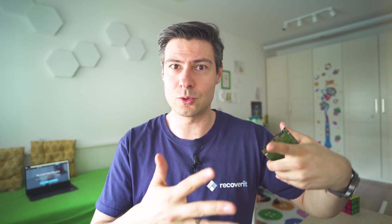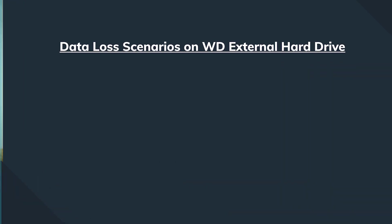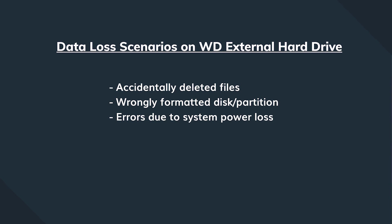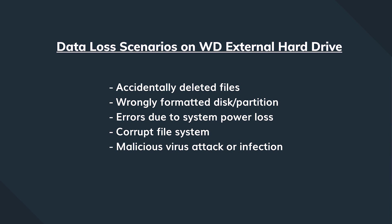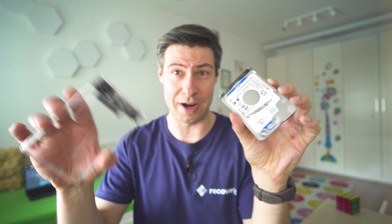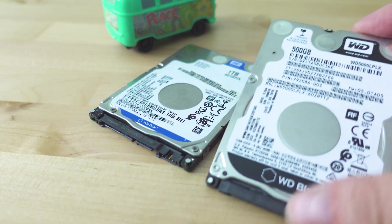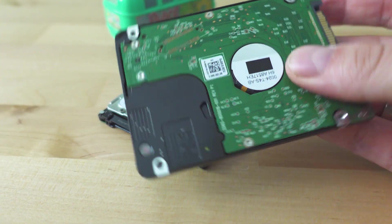Since Western Digital sells a lot of drives every year, part of your data may be residing on one of them. So now we need to figure out when and why we could end up with data corruption or data loss. Among the top suspects: accidentally deleted files, unexpected formatting, errors from power loss, a corrupt file system, files disappearing due to malware or a virus, and physical connection issues if used as an external drive.